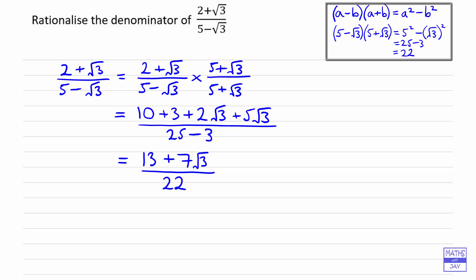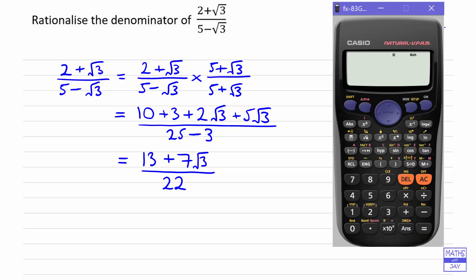So the important thing is that your calculator is set to math mode. So we'll start by selecting a fraction. We literally key in the fraction exactly as it's given to us: 2 plus root 3, and that will be over 5 minus root 3, and then equals, as before.